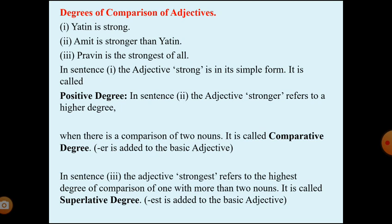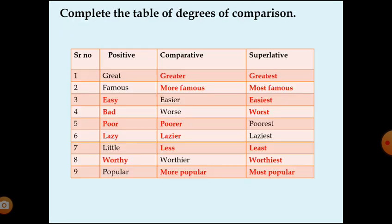These all things you have to write in your grammar copy. Now we will see the table — you have to copy this table in your grammar copy so you can find the degrees of comparison: positive, comparative, and superlative. I hope you have understood these two topics. I will be sending you the PDF. You have to write everything in your English copy and English grammar copy. Thank you.